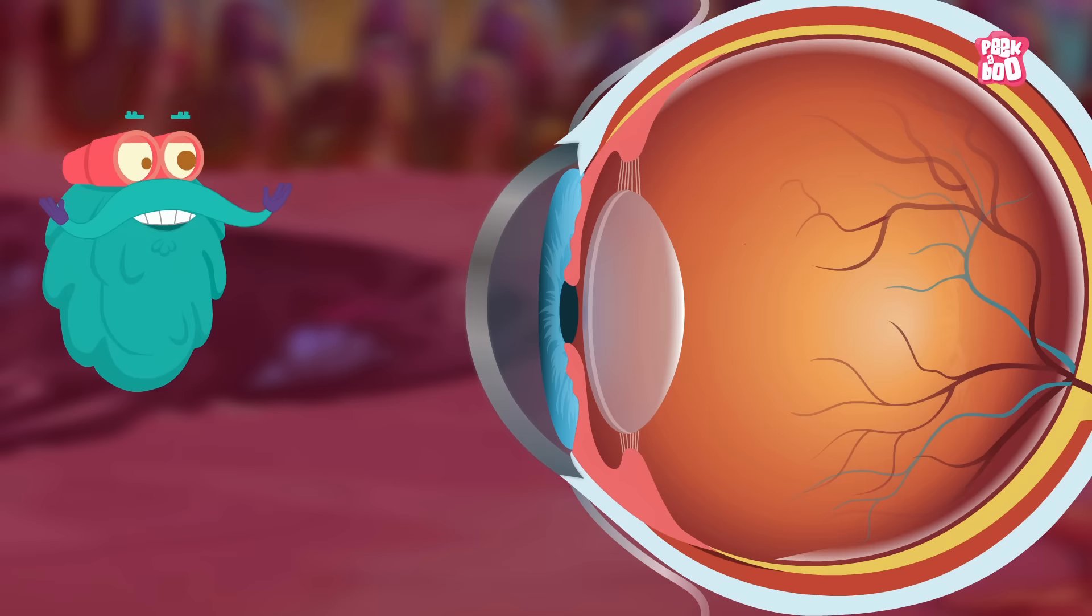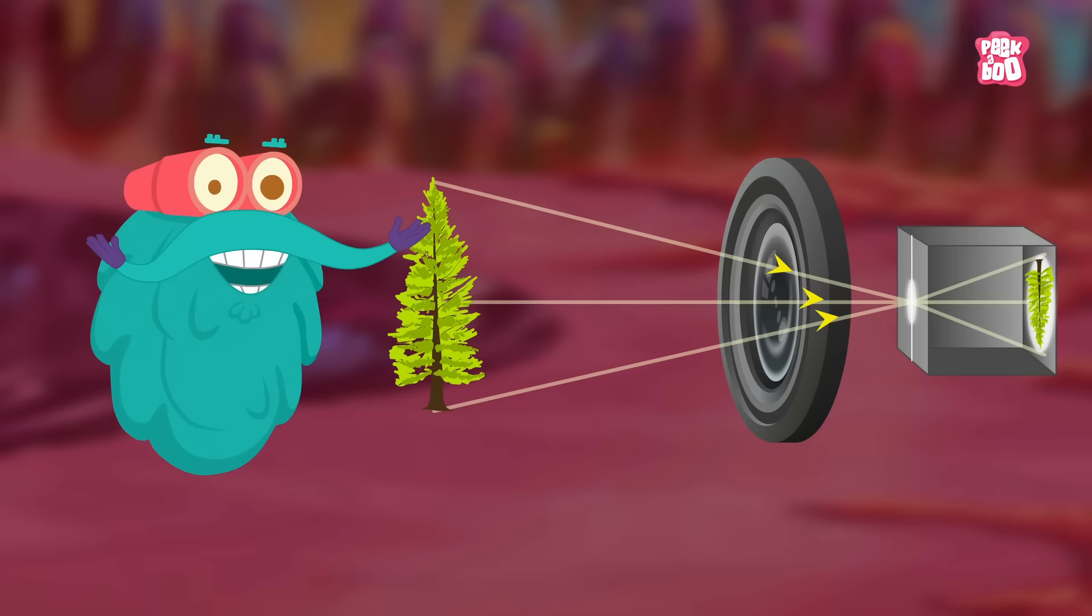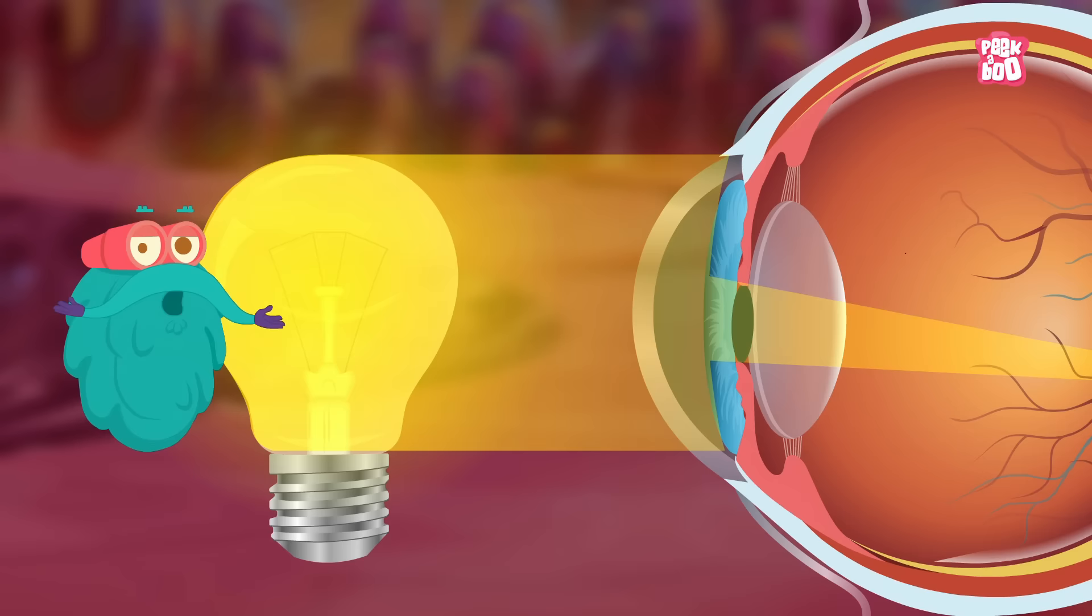This is the cornea. The cornea is the clear front surface of the eye. You know, it actually acts like a camera lens. You could say that this is the window that allows the light to get in.